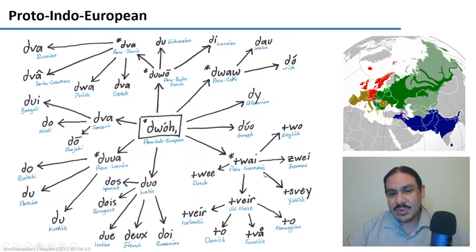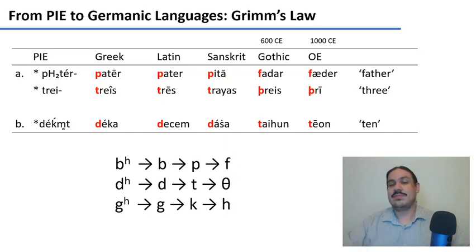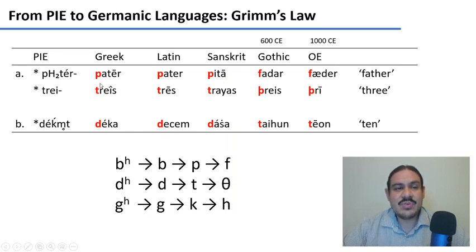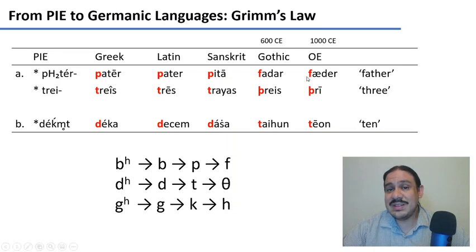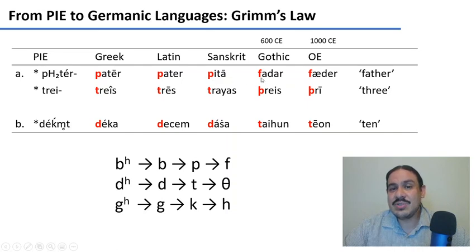English is part of the Germanic branch of Indo-European, along with German and Dutch. As languages changed from Proto-Indo-European to becoming Germanic, there were many changes in pronunciation. For example, the reconstructed Proto-Indo-European forms for 'father,' 'three,' and 'ten' — something like 'pater,' 'tre,' 'decant' — preserved original sounds p, t, and d in Greek, Latin, and Sanskrit. However, in the Germanic branch, the sound changed: the p became an f through lenition — a softening from a stop to a fricative — giving us 'father.'